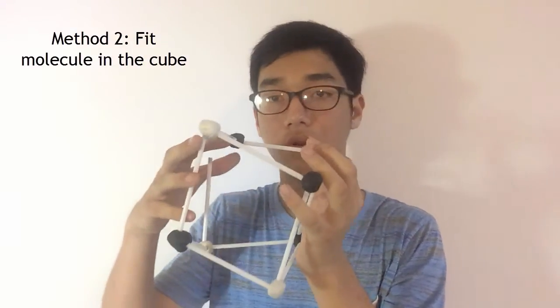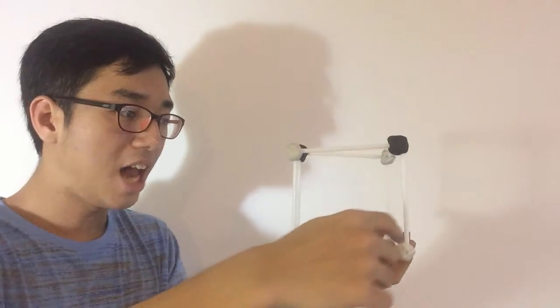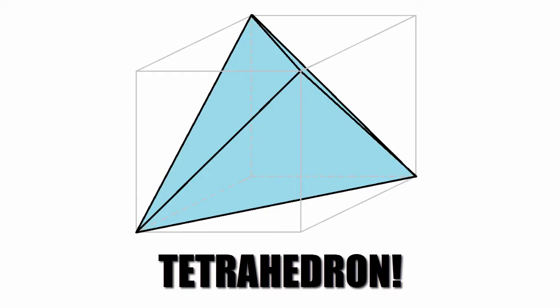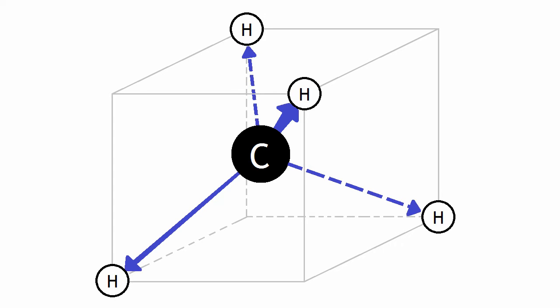There are two other methods. The second method involves a cube. If you take a cube and connect vertices at opposite corners, you get a tetrahedron. You can imagine the carbon atom at the center of the cube and all four hydrogen atoms located at alternating corners of the cube, as shown in the image here.